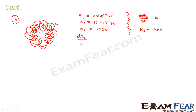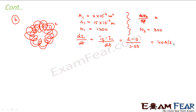So dI₁/dt is given. This equals I_final minus I_initial divided by the time taken: final is 2 amperes, initial was 0 amperes, and the time is 0.05 seconds. So dI/dt comes out to be 40 amperes per second — this is the rate of change of current in the primary coil. We have to calculate the induced EMF in the outer coil.